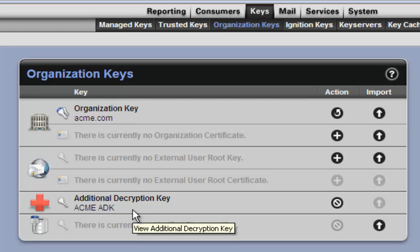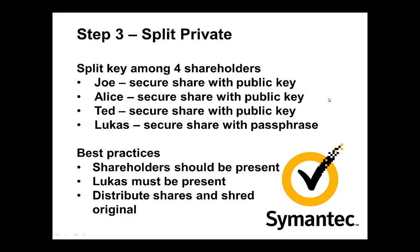Now we come to step three, which is the splitting of the private key. The private key will be split amongst four individuals: Joe, Alice, Ted, and Lucas. Each will be given one share. Joe, Alice, and Ted — their file will be encrypted using their public key. Lucas will use a passphrase. As a best practice, all four people should be there to make sure that the process is properly implemented. Lucas must be there since he is going to use a passphrase. Once the shares are created and the files are created, they'll be distributed among the four people, secured on their systems, and then the original shares need to be shredded.